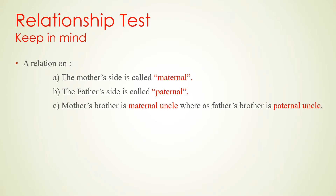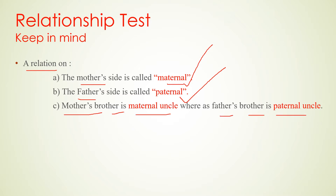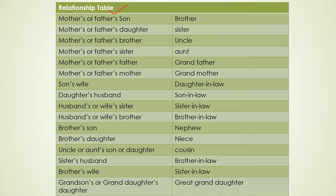What is the relationship test? What is the maternal side? Maternal aunt, maternal sister, maternal brother — the mother's side is called maternal. The father's side is called paternal. So the maternal uncle is on the mother's side, and the paternal uncle is on the father's side. Next is the relationship table, which is related to the relationship test.